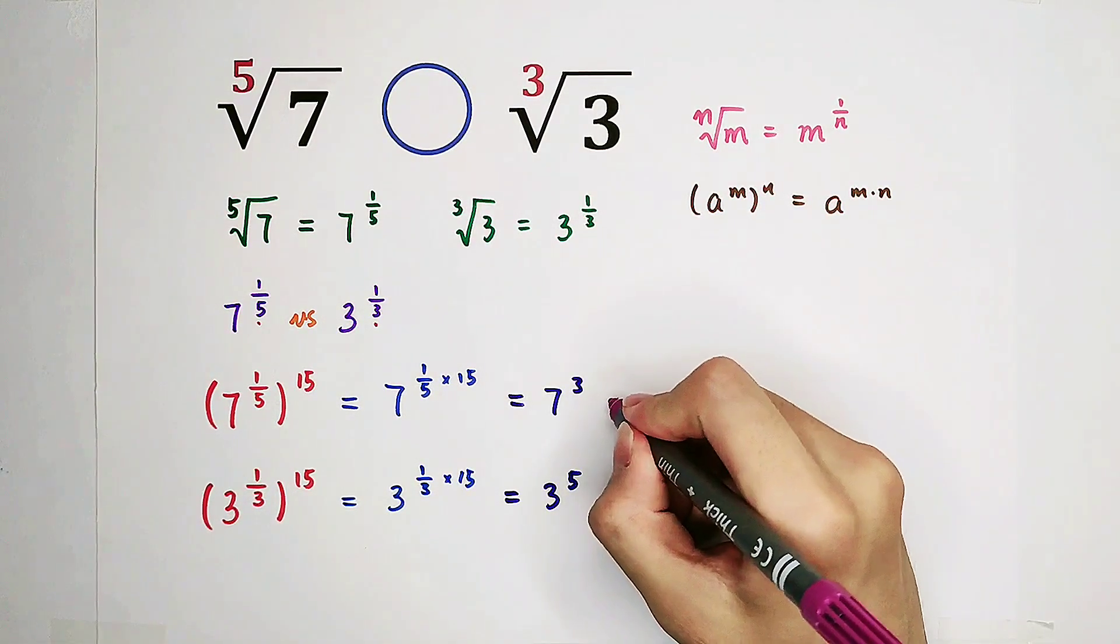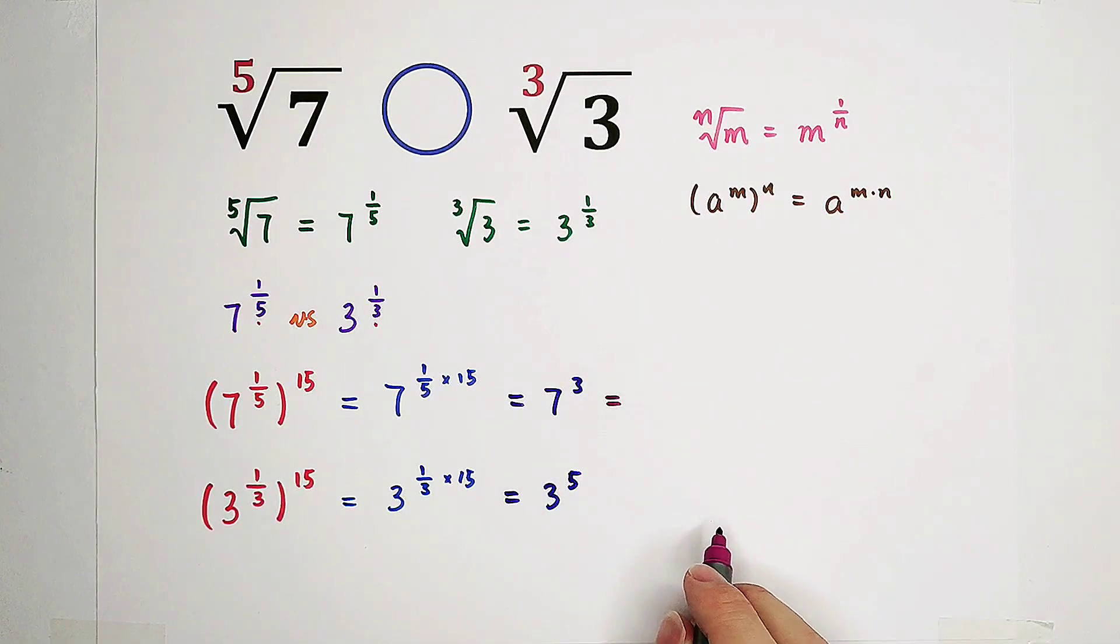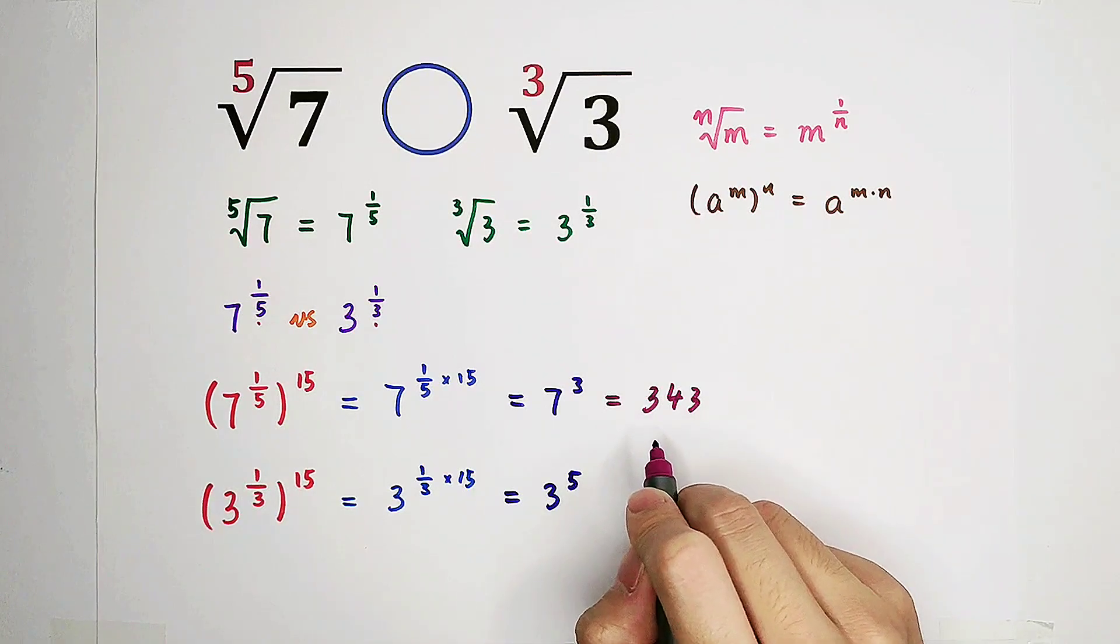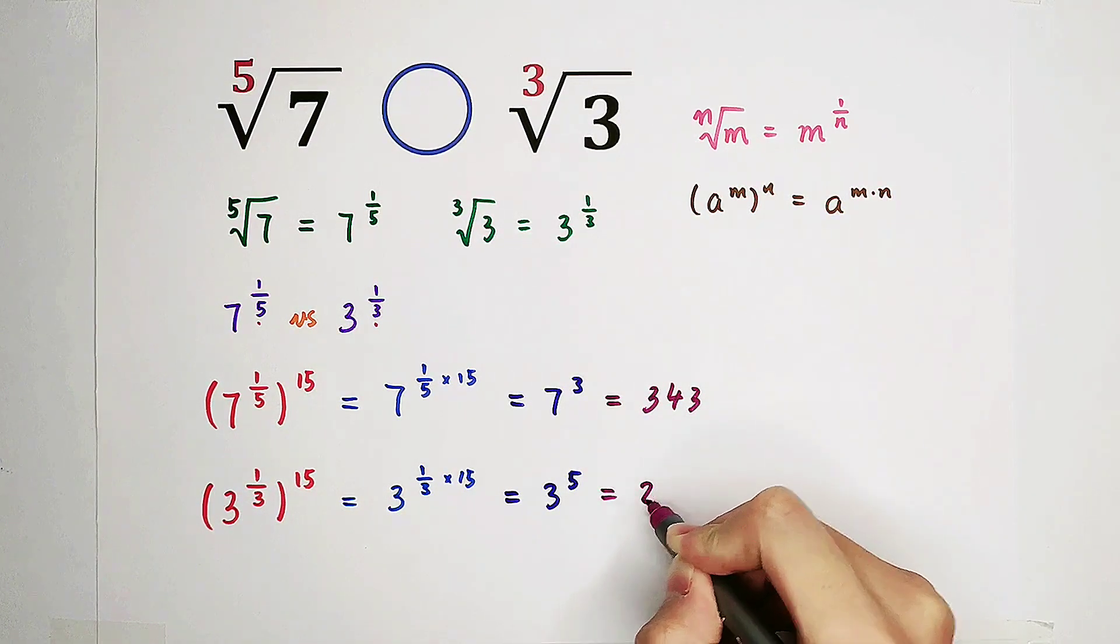And now, you know, what's this one? Just calculating. 3, 4, 3. 343. And this one is 243.